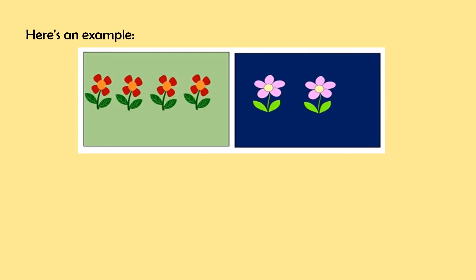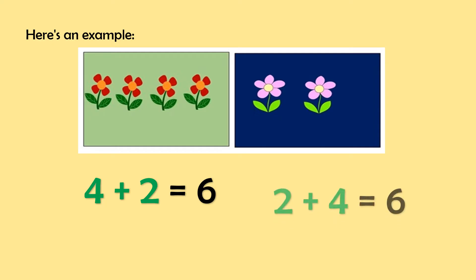Here is an example. Look at the teacher. There are four flowers in the first box and two flowers in the second box. To find the sum, we can write the mathematical sentence as 4 plus 2 is equal to 6, or 2 plus 4 is equal to 6. Notice that the sums are the same. These illustrate the commutative property of addition — changing the addends does not change the sum.